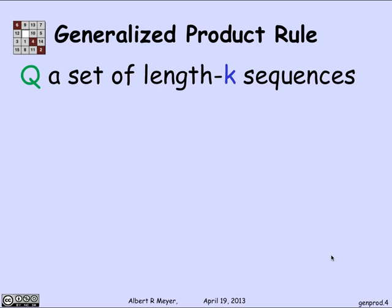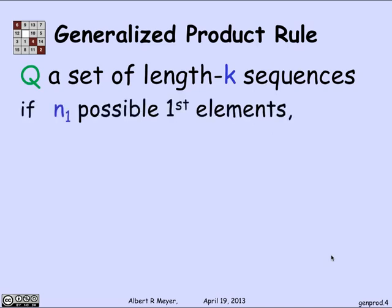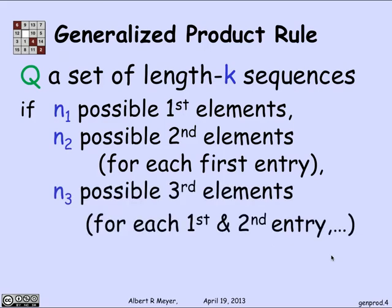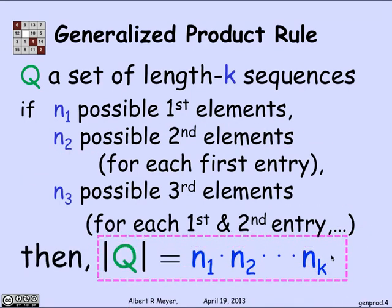Let's state the generalized product rule in general. So if we let Q be a set of length k sequences with the following property: There are n1 possible first elements among these length k sequences. And for every one of the first possible elements, if you look at the number of tuples with what the second possible coordinates are for a given first coordinate, it's always n2. And likewise, if you look at the number of possible third coordinates given the first two, it's n3, and it's uniform no matter what the first two are. Then if you have this kind of a setup, which is exactly what happens when you're picking one student after another and they can't repeat, you discover that the length k sequences with n1 first possible choices, n2 second possible choices down through nk, kth possible choices, is n1 through nk. So that's the statement of the generalized product rule in the magenta box.